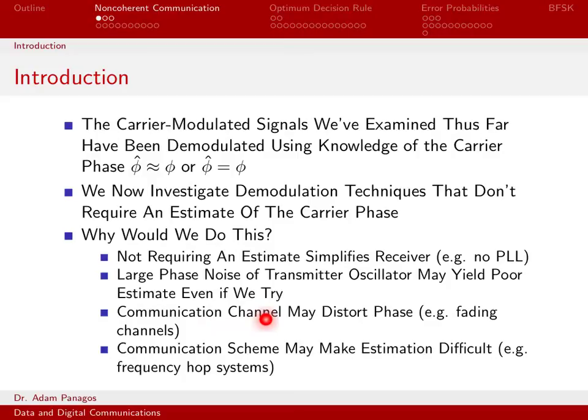Or maybe the scheme that we're using makes tracking the carrier phase difficult. For instance, in frequency hop systems, these are systems that jump around from frequency to frequency to frequency. Every time that you do that jump at the transmitter and you switch to a new carrier frequency, that means your phase lock loop at the receiver is going to have to reacquire and latch on to that new carrier phase. So that's just a very difficult thing. So there's just a whole multitude of reasons why trying to track the carrier phase at the receiver is complicated. It requires more hardware. Or even if you try, it might be a very difficult thing to do. So this is some motivation for why we want to use noncoherent communication techniques.